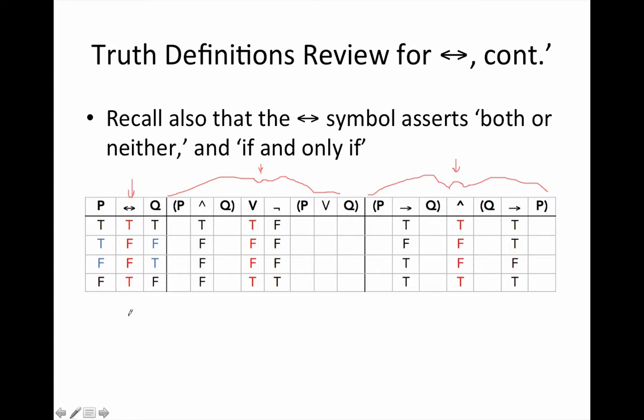Notice again, here's our biconditional symbol. Here's both or neither. And here's if one, then the other. And if the other, then the one. This last example is a way of talking about P being a sufficient and necessary condition for Q.